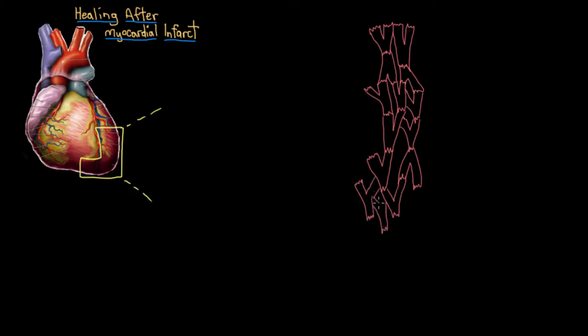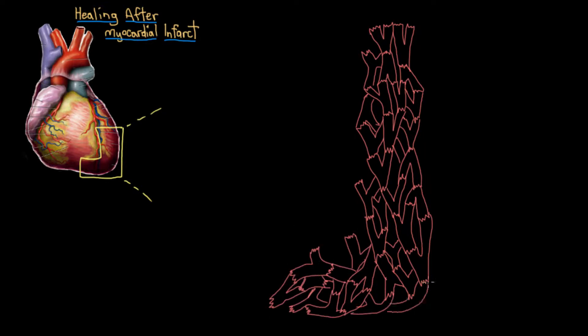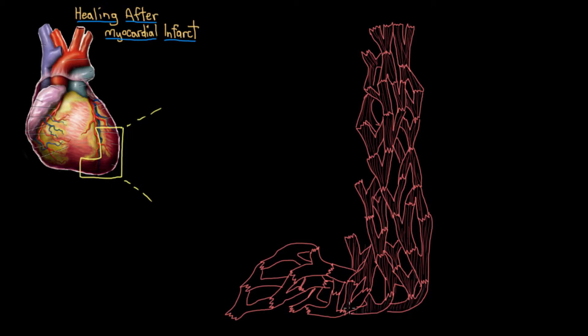I'll draw in these cardiomyocytes, these heart muscle cells here. And these are the striations that they have because of their contractile proteins. And here are their nuclei. So we'll start off with this non-infarcted heart here with nice, intact muscle.